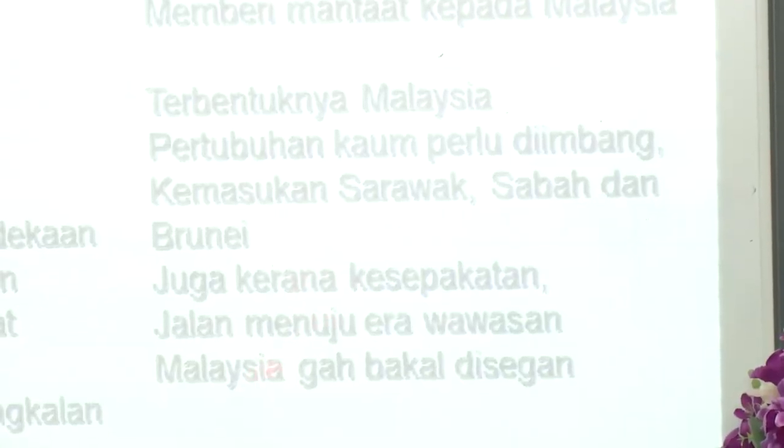Terbentuknya Malaysia, PM pertama kemulakan idea. Sabah, Sarawak, Singapura, Brunei diajak bersama. Menjadi harapan Malaysia menentang bintang tiga. Terbentuknya Malaysia kerana adanya faktor ketiga — dasar dekolonisasi jadi tujuan, yang tertindas beroleh kemerdekaan, yang mundur beroleh kemajuan. Politik Asia Tenggara mendapat kestabilan, juga langkah menyelamat pangkalan. Bahan mentah, kazanah negara, biji timah, balak, juga minyak merupakan sebuah pasaran berharga memberi manfaat kepada Malaysia. Terbentuknya Malaysia — pertubuhan kaum perlu diimbang, kemasukan Sarawak, Sabah dan Brunei, juga kerana kesepakatan jalan menuju era wawasan, Malaysia gah bakal disegan.